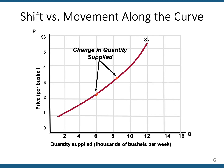If the only thing that changes is the price of the product, you move along the supply curve. If the market price changes from $2 — where 6 bushels would be supplied — and rises to $3, then 8 bushels would be supplied. The only thing that changed in this case was the price of the product, so we move along the curve. That results in a change in the quantity supplied.